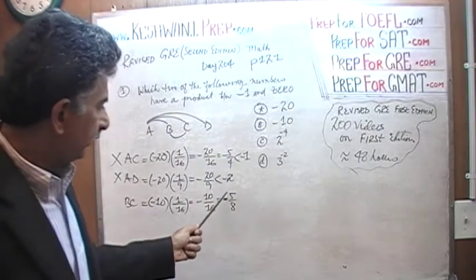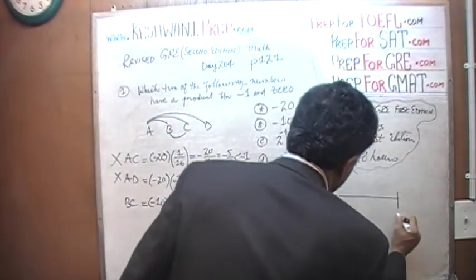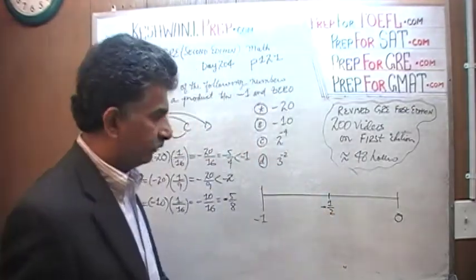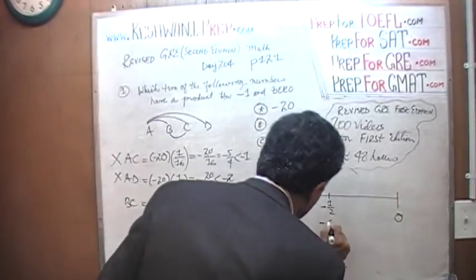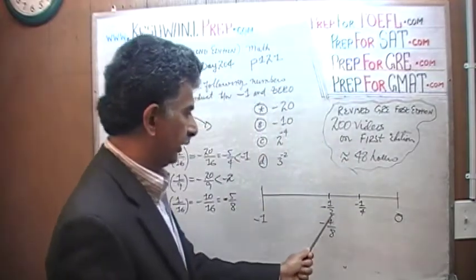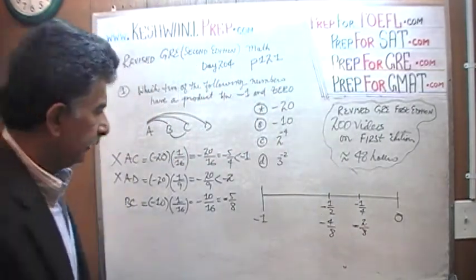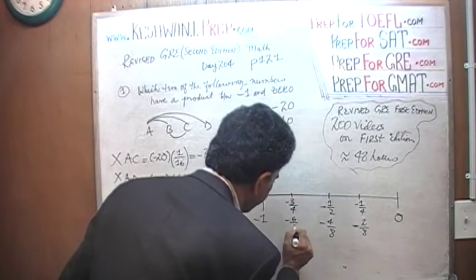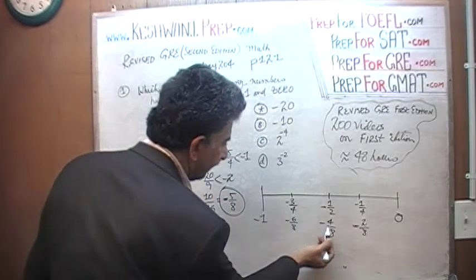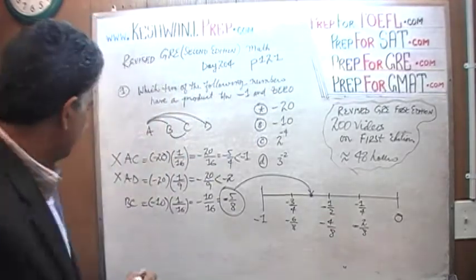If you have trouble seeing where negative 5 over 8 falls in relation to negative 1 and 0, just plot it out. Here is 0, here is negative 1, here is negative one-half, which is the same as negative 4 eighths. Here is negative one-quarter, which is negative 2 eighths, and negative three-quarters, which is negative 6 eighths. Converting everything to eighths, negative 5 eighths falls between negative 6 eighths and negative 4 eighths — right there. As you can clearly see, it falls in the range between 0 and negative 1. That is our answer: B and C.